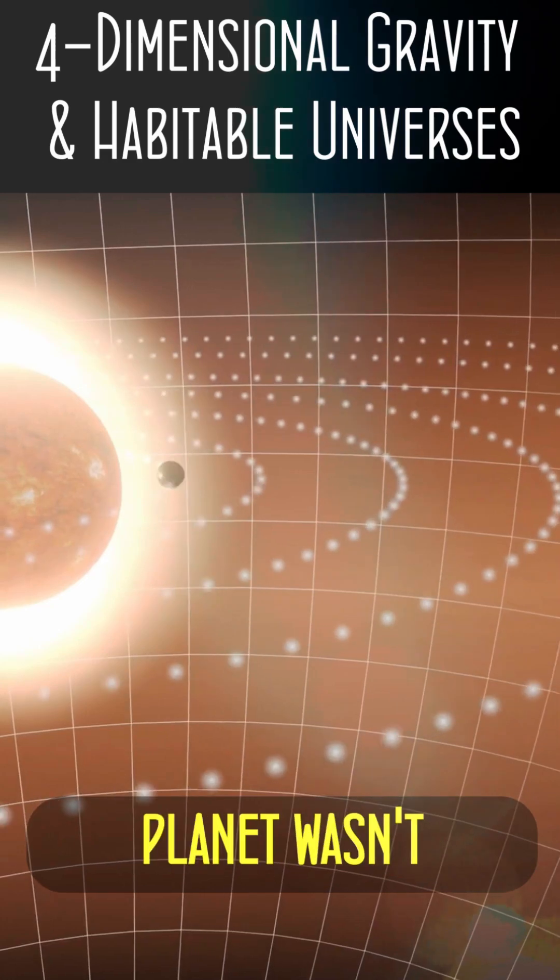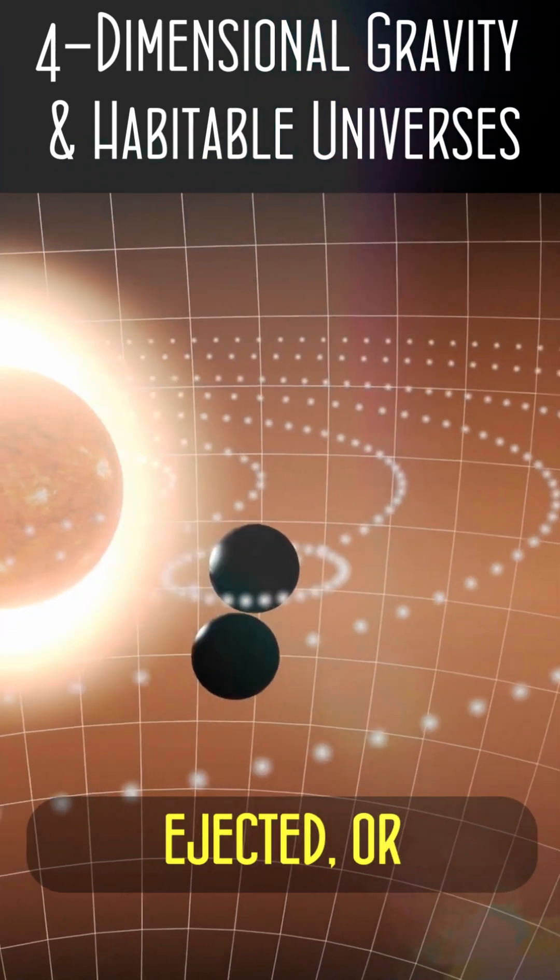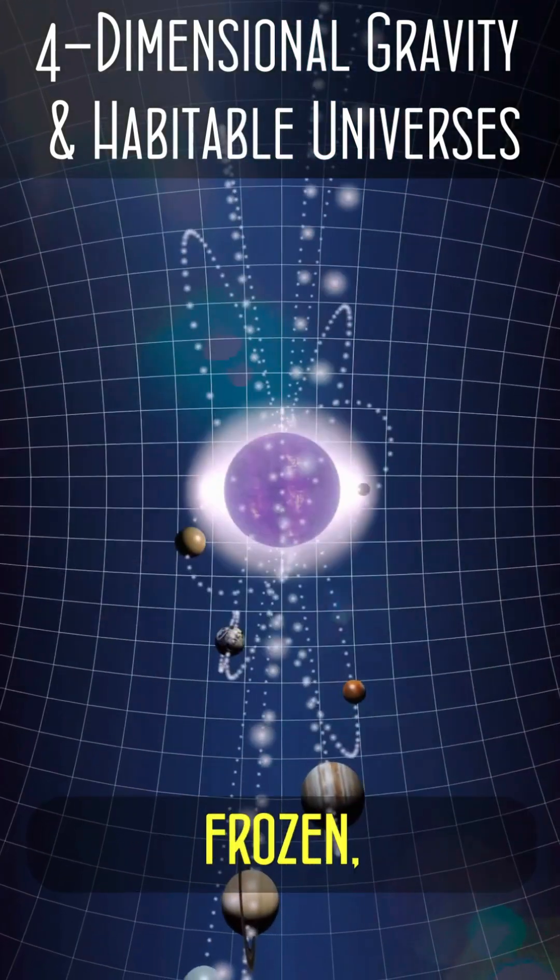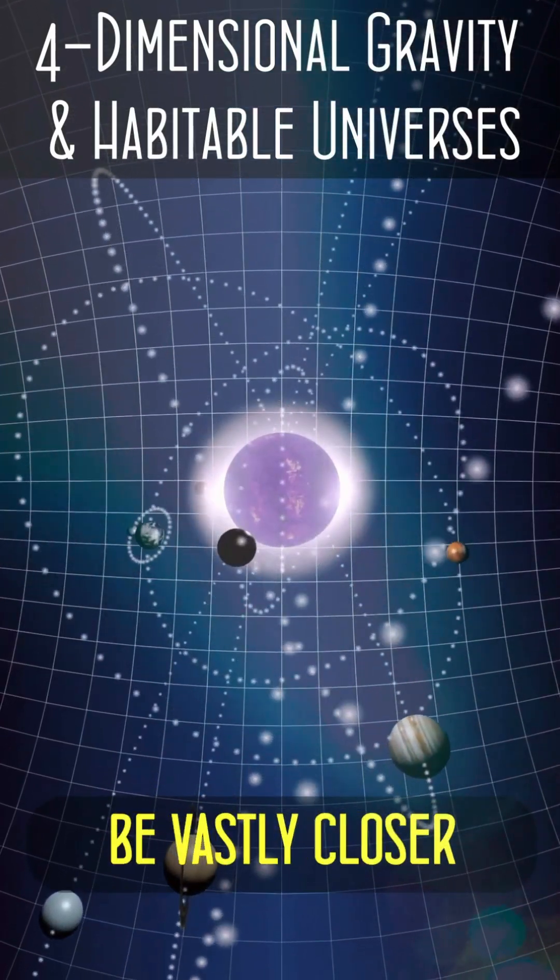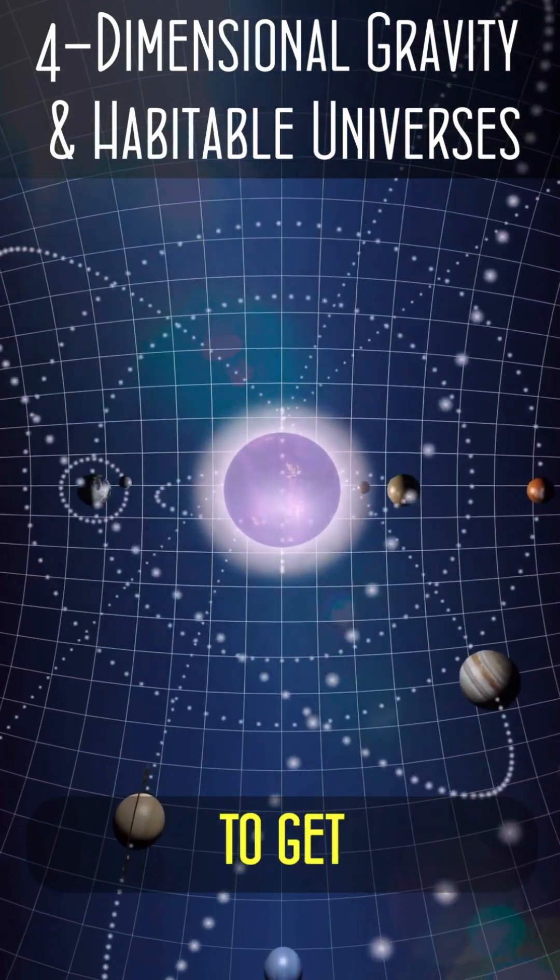guaranteeing that even if the planet wasn't disturbed, ejected, or swallowed by its sun, it would still be roasted and frozen, particularly as it would need to be vastly closer to its parent star to get enough light.